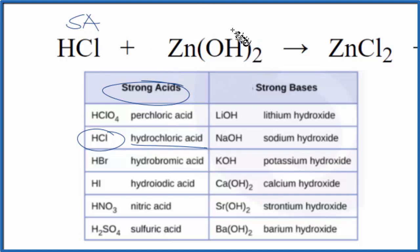Zn(OH)2, we know it's a base. We have the hydroxide group here bonded to the metal. But it's not on our list of strong bases. That means this is going to be a weak base.